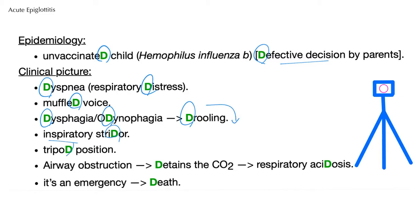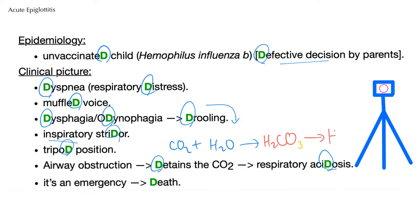Inspiratory stridor. Tripod position. Airway obstruction will lead to CO2 being detained. When you detain the CO2, you'll end up with respiratory acidosis because CO2 combines with water — which is everywhere in your lungs since they are nice and moist — leading to the formation of H2CO3, which is carbonic acid. Carbonic acid gives us HCO3 and the nasty H, which is the acid, the ultimate acid — the protons.